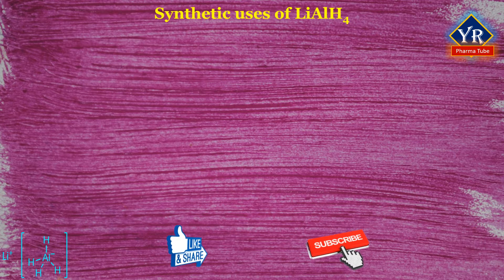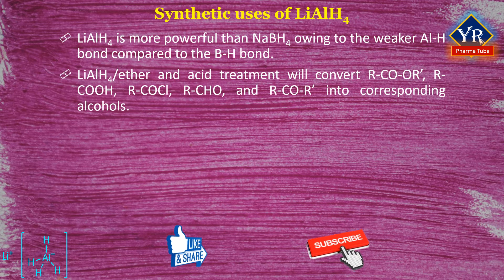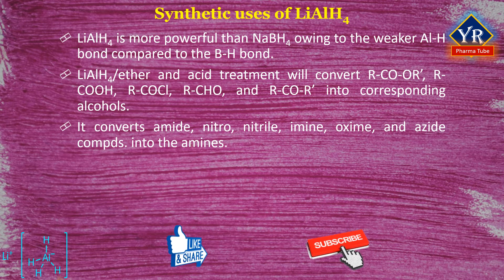Lithium aluminium hydride is widely used in organic chemistry as a reducing agent. It is more powerful than the related reagent sodium borohydride, owing to the weaker aluminium-hydrogen bond compared to the boron-hydrogen bond. Lithium aluminium hydride in diethyl ether, followed by acid treatment, will convert esters, carboxylic acids, acid chlorides, aldehydes, and ketones into the corresponding alcohols. Similarly, it converts amide, nitro, nitrile, amine, oxime, and azide compounds into amines. It also reduces quaternary ammonium cations into the corresponding tertiary amines. Reactivity can be tuned by replacing hydride groups with alkoxy groups.